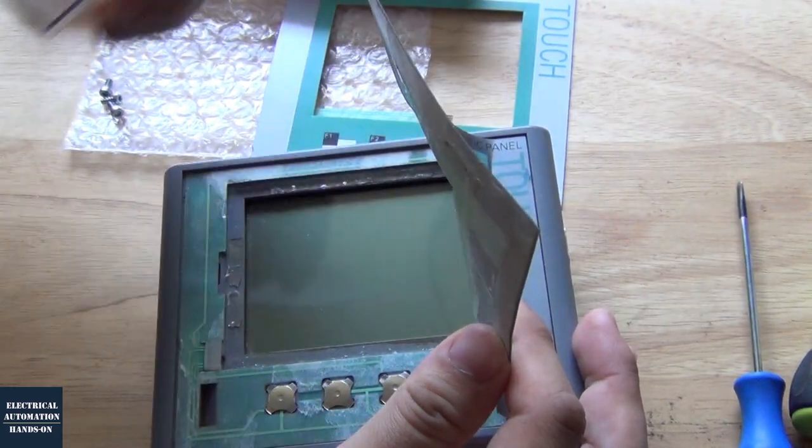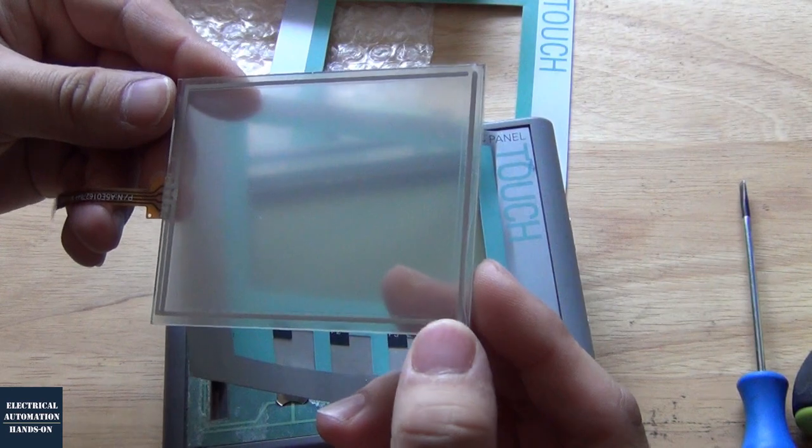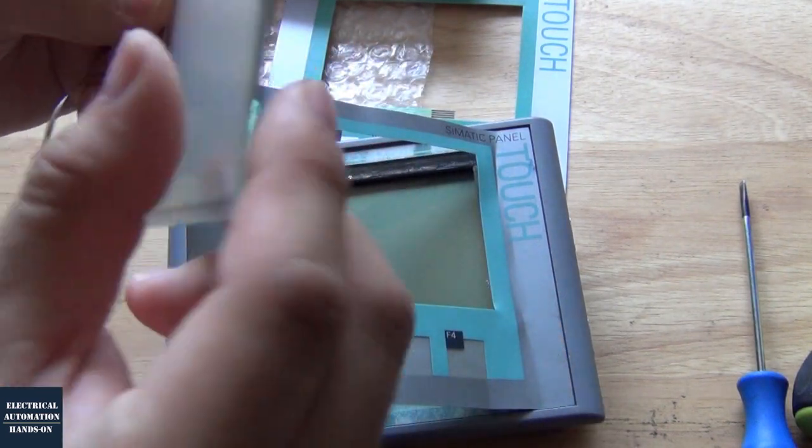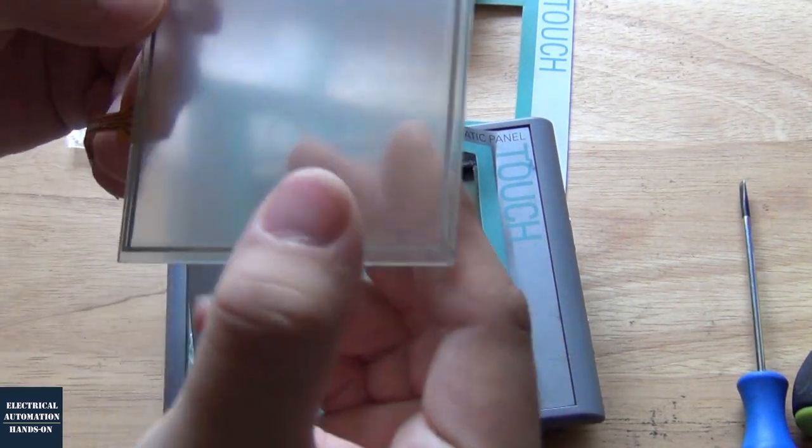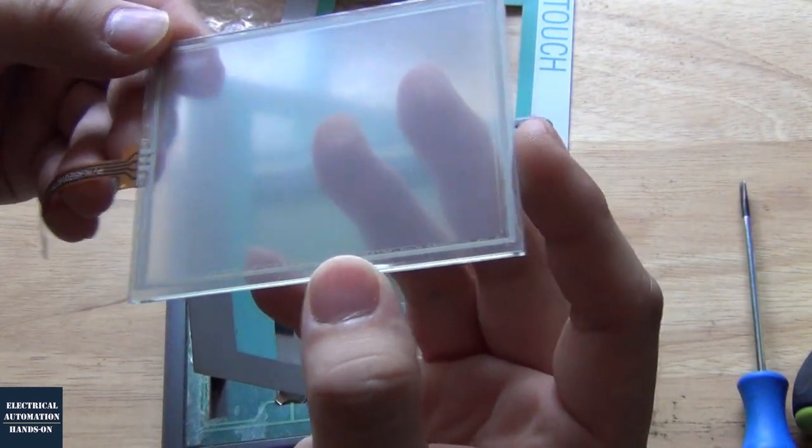And then now we are going to load this new screen right here. So for this new one, it has a film. We need to take off this film. Keep in mind the film side, that's the outside. So that is the front, at the top.